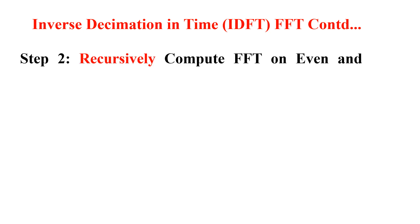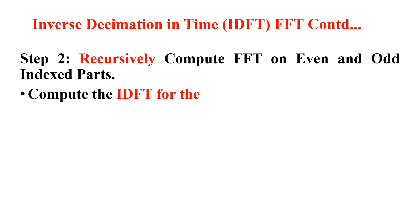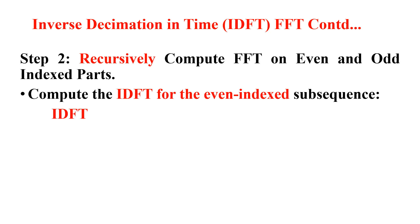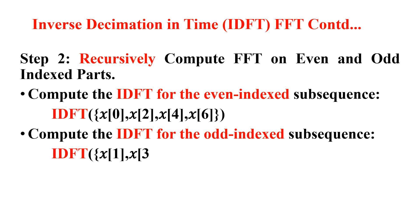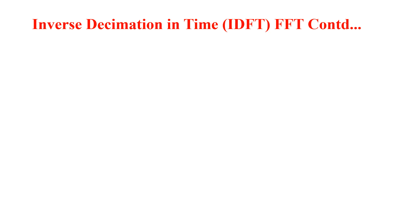Step 2: Recursively compute the IDFT on the even and odd indexed parts. Compute the IDFT for the even indexed subsequence — that is IDFT of x(0), x(2), x(4), and x(6). Similarly, compute the IDFT for the odd indexed subsequence — that is IDFT of x(1), x(3), x(5), and x(7). This is step number 2.